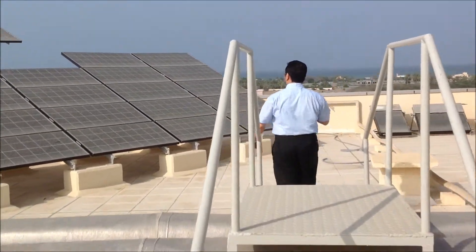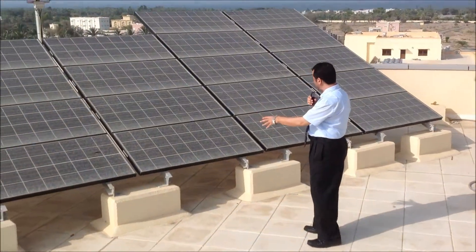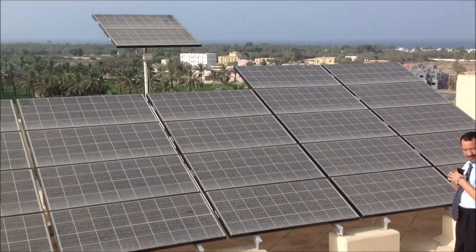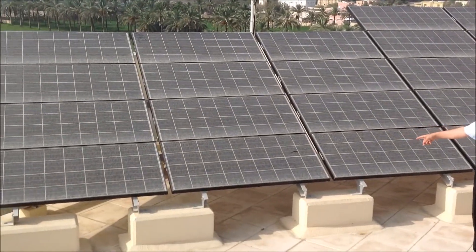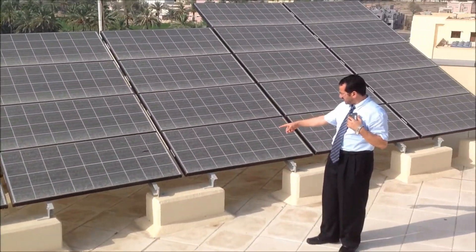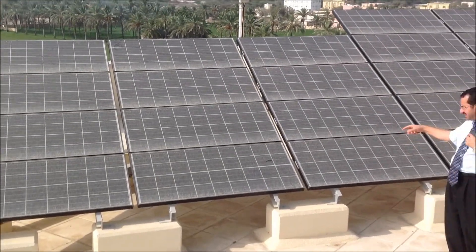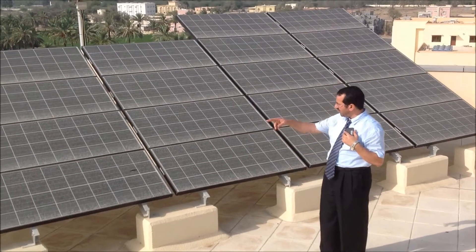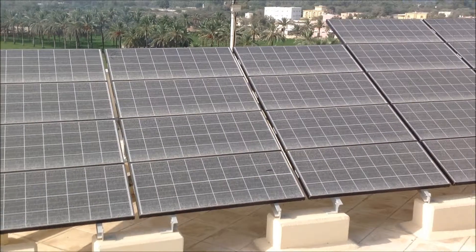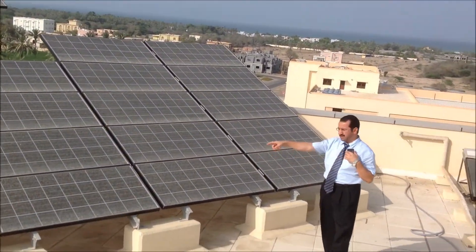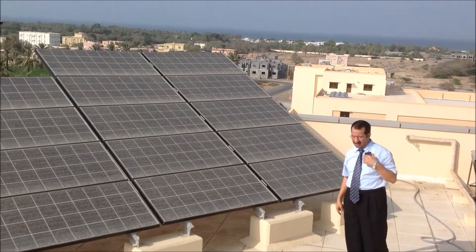You can see here we have three systems. These systems are standalone system, grid-tied system, and tracking system. The standalone system here is 1680 Watt, actually 1860 Watt, where we have 12 panels, each 140 Watt. We have them connected series-parallel to take the wires or the cable down inside to the lab.